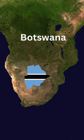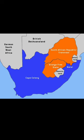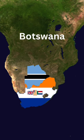Botswana, formerly known as Bechuanaland, was originally created in 1885 as a buffer state between the British Empire and the Boer Republics of the Orange Free State and the Transvaal. It ceased as a buffer state when the Boer Republics were incorporated into the Cape Colony in 1902 after the Second Boer War.